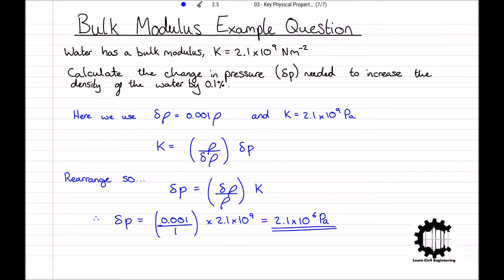Therefore, the change in pressure needed to increase the density of the water by 0.1 percent is equal to 2.1 times 10 to the power of 6 pascals.